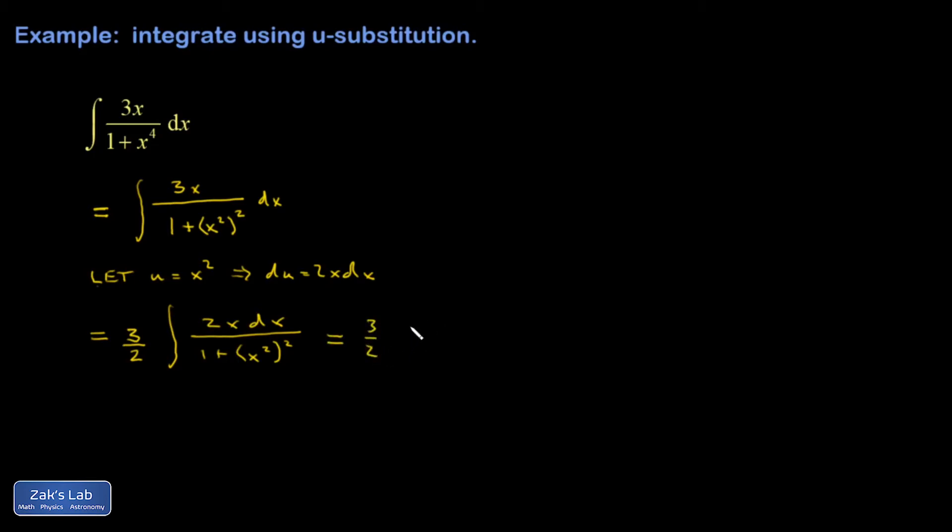Now it's looking good. 2x dx is just du. And then the denominator is just 1 plus u squared. Now it's exactly what I can guess to be the inverse tangent function.